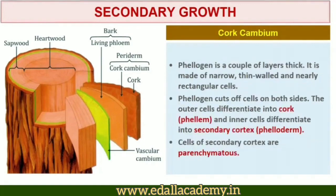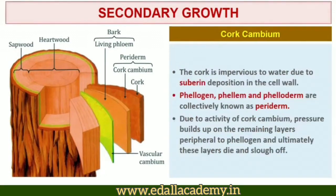Hence, another meristematic tissue called cork cambium or phellogen develops, usually in the cortex region. Phellogen is a couple of layers thick, made of narrow thin-walled and nearly rectangular cells. Phellogen cuts off cells on both sides — the outer cells differentiate into cork or phellum, while the inner cells differentiate into secondary cortex or phelloderm. Cork is impervious to water due to suberin deposition in the cell wall. Phellogen, phellum, and phelloderm are collectively known as periderm.